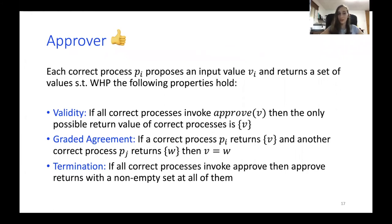So we're done with the shared coin primitive, and now we turn to a different one, which is called approve. Each correct process p_i proposes an initial value v_i and returns a set of values such that with high probability the following properties hold. First, the validity property states that if all correct processes invoke approve(v) with the same value v, then the only possible return value will be the singleton of v itself. For graded agreement, if a correct process p_i returns the singleton {v} and a different correct process p_j returns the singleton {w}, then v must equal w. And lastly, for termination, if all correct processes invoke approve, then approve returns with a non-empty set at all of them. And we make an additional assumption, which is that approve can only be invoked with at most two different values.